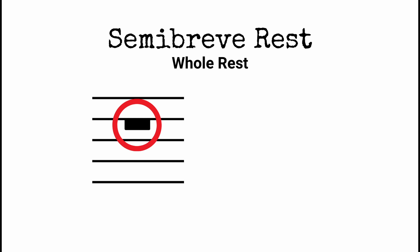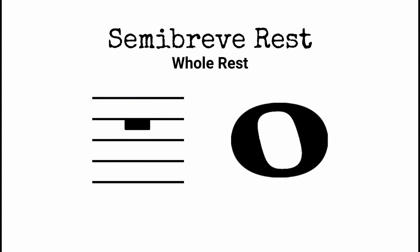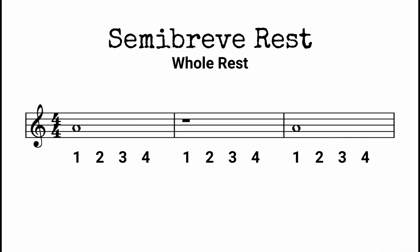The semi-breve rest tells us to stay silent for four beats, just like the semi-breve note tells us to play a note for four beats. You'll notice that the rests take their name from the note of the same length. Let's listen to an example. The wood block marks the beat and the recorder plays the notes.